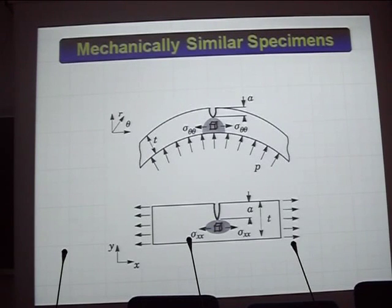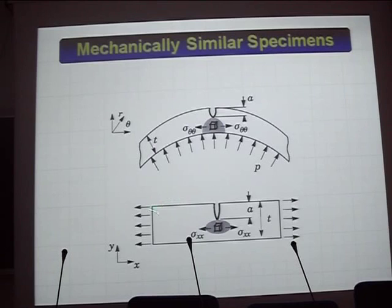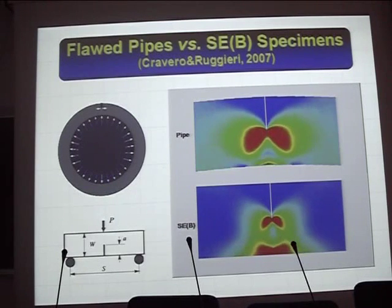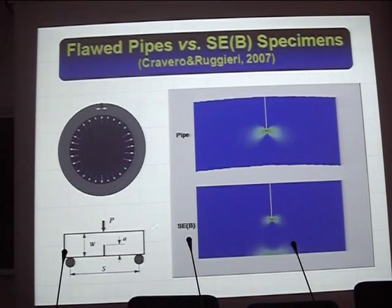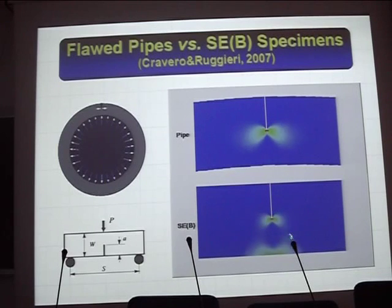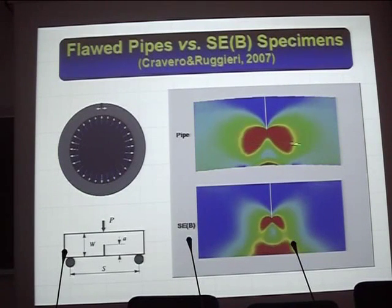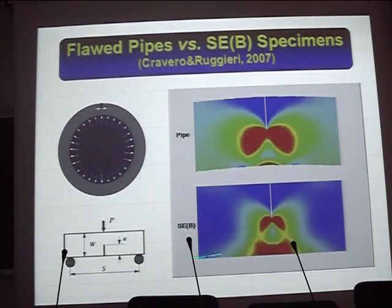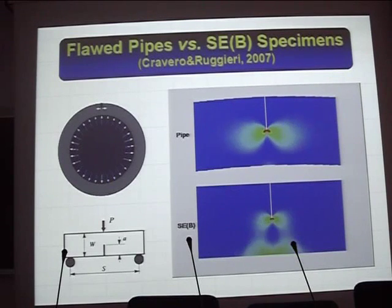About five, six — perhaps ten years ago — we started the idea of using what we call mechanically similar specimens. The idea is to use a correct configuration, a specimen, where we have the same constraint conditions as in our pipeline. This is an animation we did a couple of years ago showing a pipeline and an SEB specimen. You can see the development of the plastic zone in the pipe and in the SEB. The SEB shows a more confined plastic zone, indicating it is a high constraint, more conservative specimen.